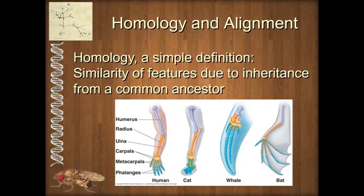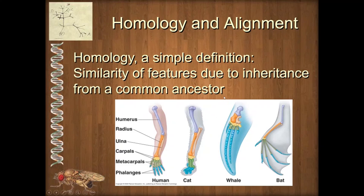Let's look at a morphological example. Here we have diagrams of four different tetrapod vertebrates — all mammals, though we could choose a frog, lizard, or bird and it would still work. Notice that despite differences in shape and even loss of some bones — the whale is missing a couple of phalanges — we can make very clear connections between the components of the forelimb. The forelimb itself is homologous, and even its components: the human, cat, whale, and bat all have a humerus because their ancestor had one and passed it down.